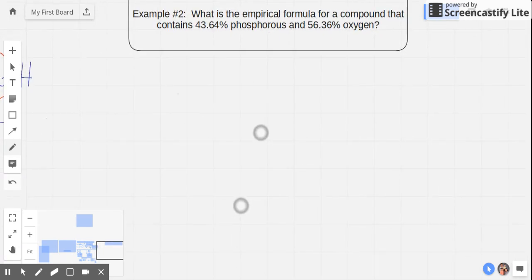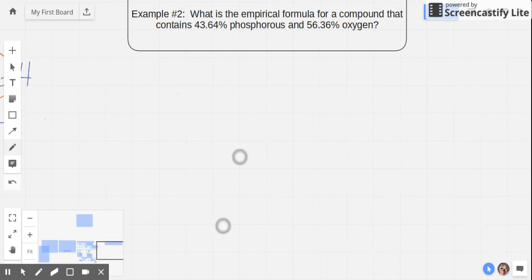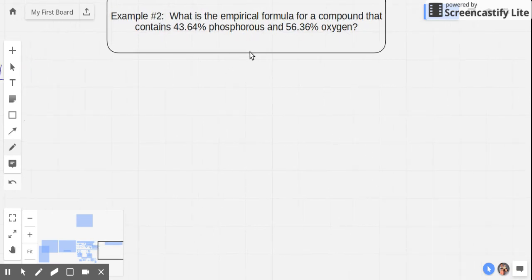Let's take a look at how we approach this example number two. Example number two says, what is the empirical formula for a compound that contains 43.64% phosphorus and 56.36% oxygen? If you notice there are only two components, phosphorus and oxygen, and the total of the percentages is 100%. So the values are okay, then we can begin.